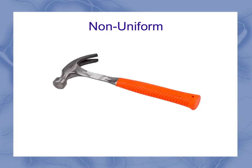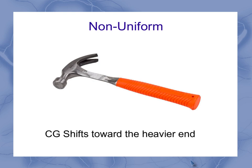Now if we've got a non-uniform object, like a hammer, it has more mass at the hammer head than in the handle. What we find is that the center of gravity shifts towards the heavier end. So for a hammer, you might end up with a center of gravity that's way up close to the head. If we've got non-uniform objects in this class, most of the time we're going to tell you exactly where that center of gravity position is.